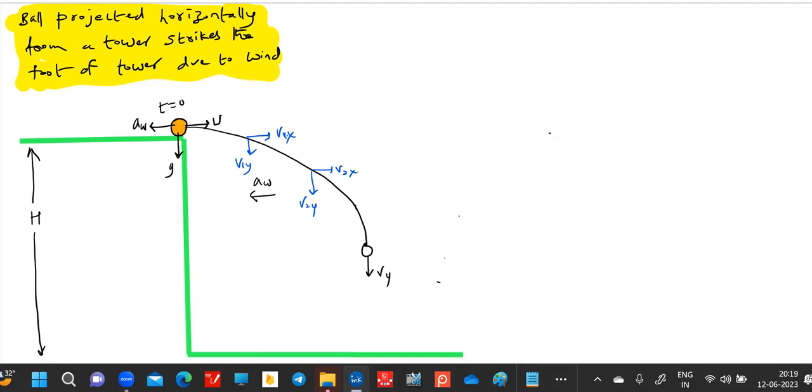Vertically, because the horizontal component of velocity should become zero. Because the wind will retard the horizontal component of velocity, so somewhere at one point the particle will have only the vertical component. Then again the wind will continuously try to impart the acceleration.